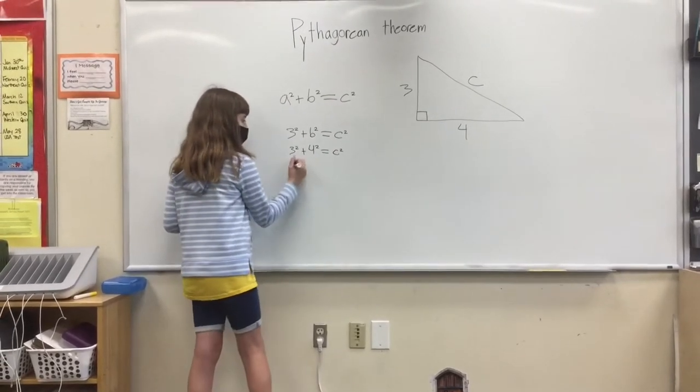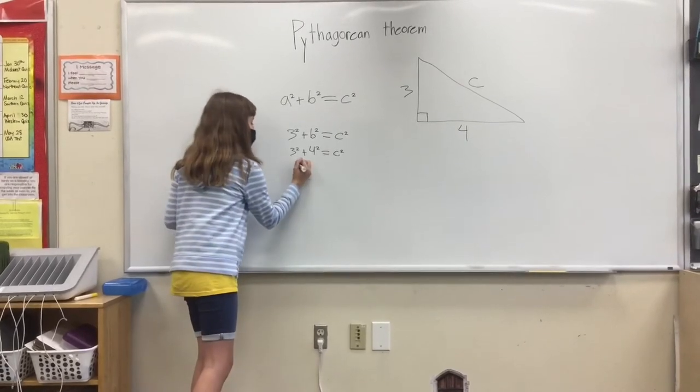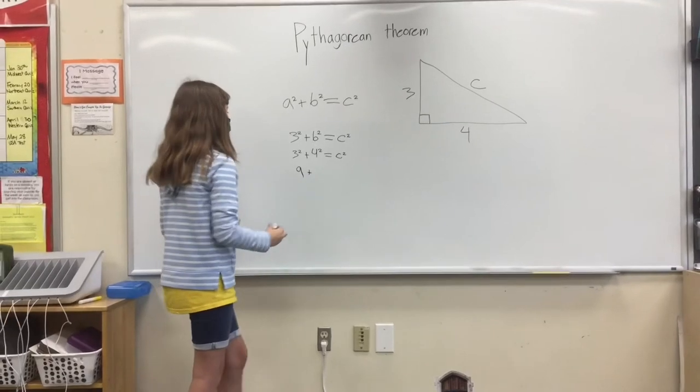3 squared is 9. We can put 9 here. And 4 squared is 16.